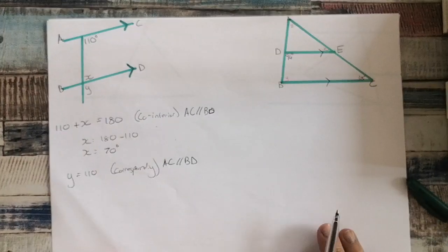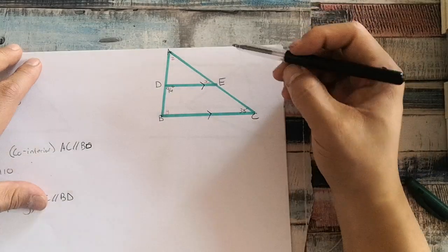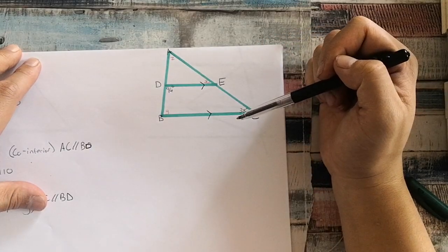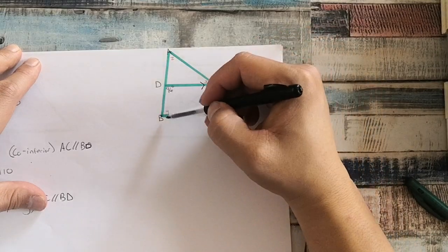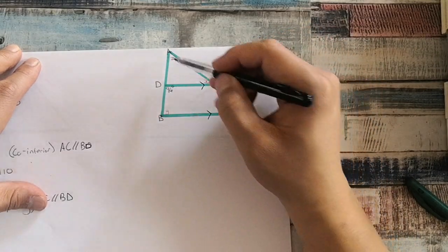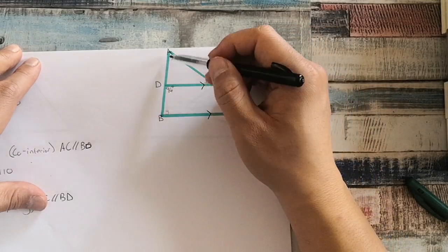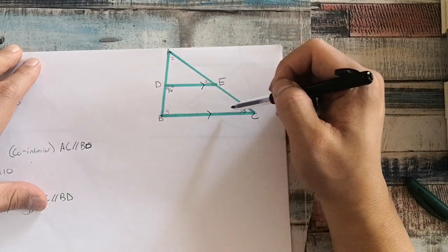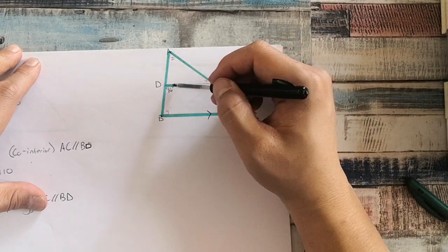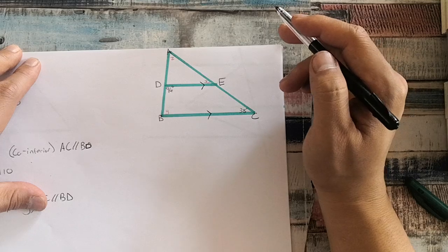I've just solved for X and Y. Looking at this next one, I need to solve for Z, X, and Y. I've got parallel lines over here and here. There's no Z shape visible, but I've got an F over here, and there's a U over here as well. And I've got triangles. So there are many ways to solve this one.